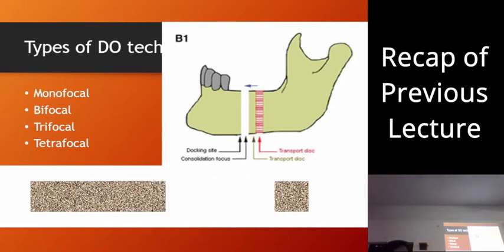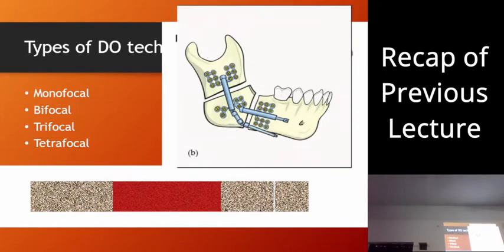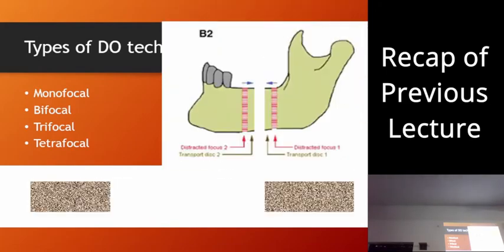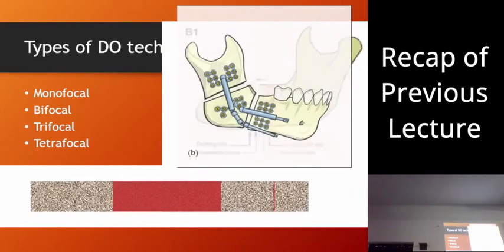You get the idea — trifocal means there will be three sides where new bone formation occurs. This is an example of bifocal, where you can see the transport disc approach.